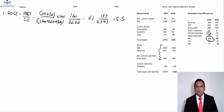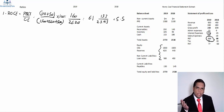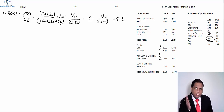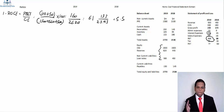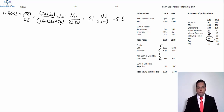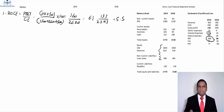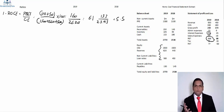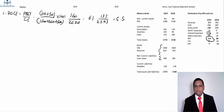Looking at the return on capital employed from 2018 to 2019, the ROCE has improved by 0.6%, meaning that with the same proportion of assets, the company has improved its return.